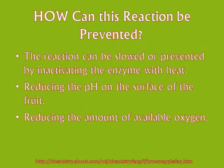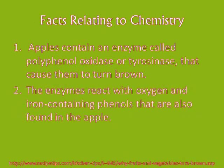The reaction is also speeded up by the presence of iron, such as an iron or rusted knife, or copper, such as a copper bowl. The reaction can be slowed or prevented by inactivating the enzyme with heat, reducing the pH on the surface of the fruit, reducing the amount of available oxygen, or using cutlery that has some corrosion as is seen with lower quality steel knives. This can increase the rate and amount of the browning by making more iron salts available for the reaction.